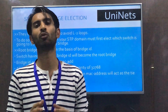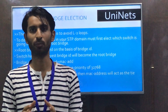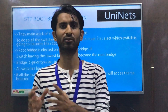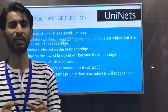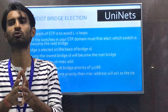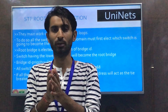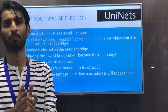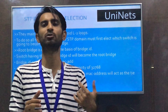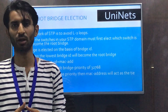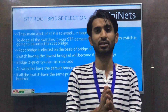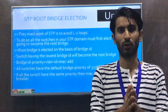Now how does the root bridge election take place according to the bridge ID? We have two or three switches. They exchange BPDUs — Bridge Protocol Data Units — which are the messages through which STP communication takes place. In those BPDUs they exchange their bridge ID, composed of the three terms we discussed. Whichever switch has the lowest bridge ID will win the election and become the root bridge.